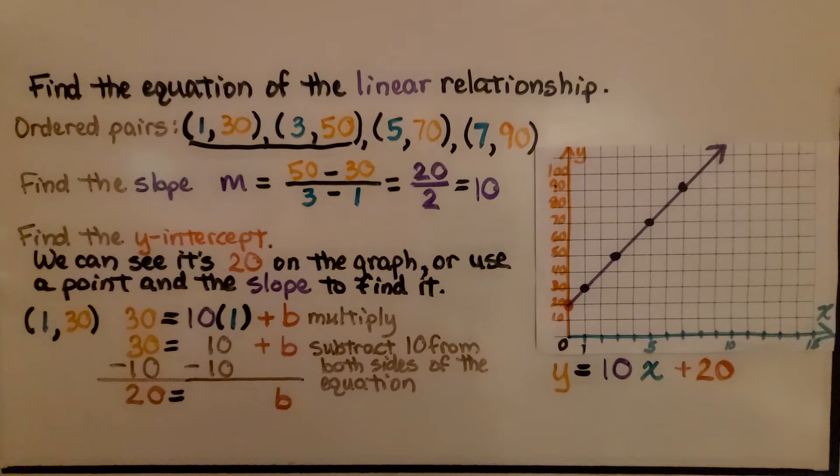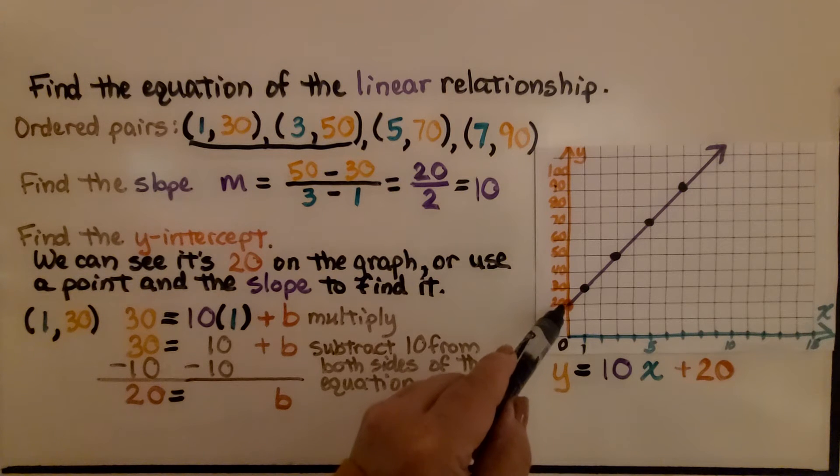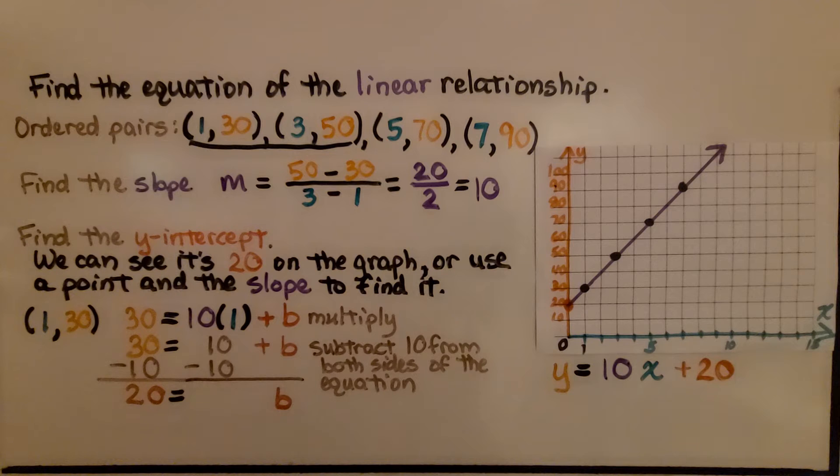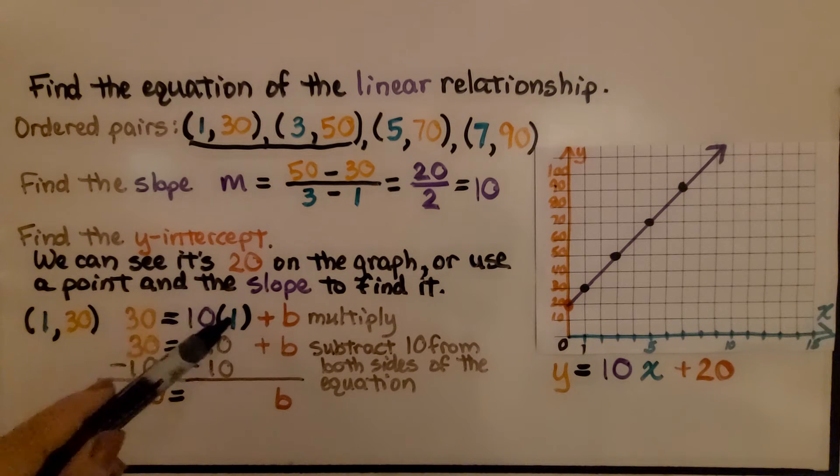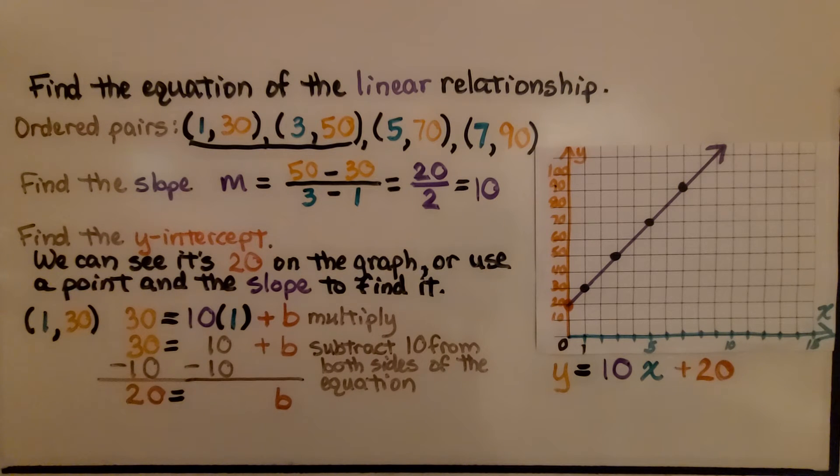Now we find the y-intercept, and we can see it's 20 on the graph. We can see it right there, it's hitting the y-axis at 20. Or we could use a point and the slope to find it, to prove it. So I'm using this point, 1,30, the first one. And I'm using that slope, 10.